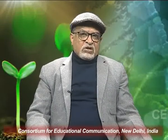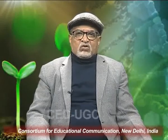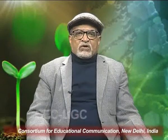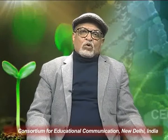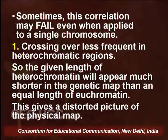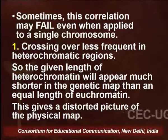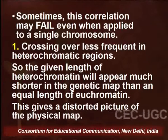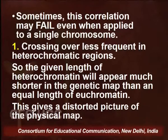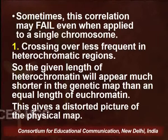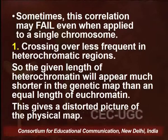The first problem to consider is euchromatin and heterochromatin, because there will be many areas which are genetically active, and others which are absolutely condensed and heterochromatic. Additionally, there is a problem of multiple crossovers. This correlation we are talking about may fail even when applied to a single chromosome, because crossing over is definitely less frequent in heterochromatic areas. Within a given length of heterochromatin, that length would appear much shorter in the genetic map. So how can you get a realistic picture of the physical map? It would be a distorted picture.